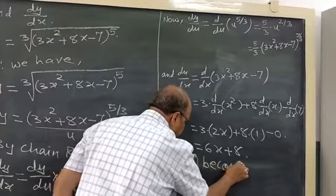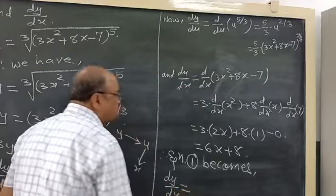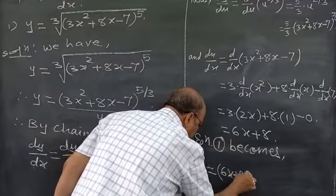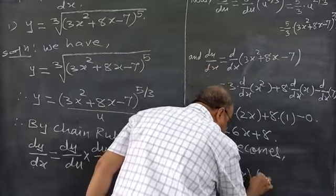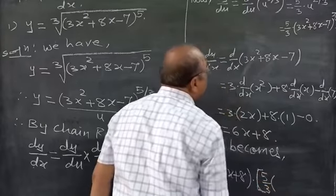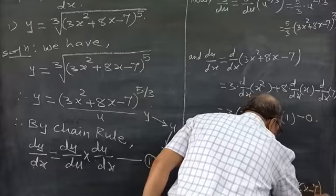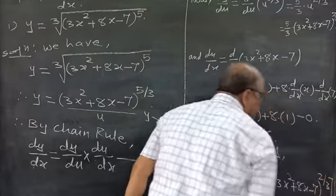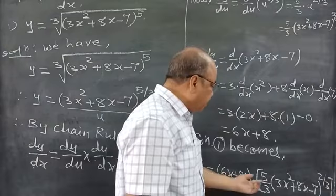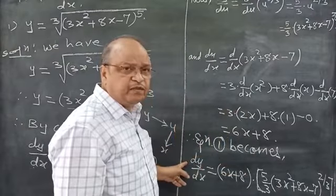Therefore equation 1 becomes: putting these values into equation 1. dy by dx is equal to the product of the two factors: (5/3) into (3x² + 8x - 7) raised to the power 2 by 3, into (6x + 8). This is the complete derivative.